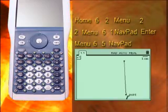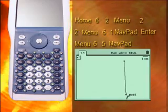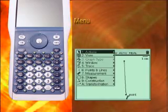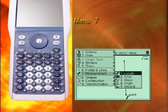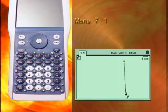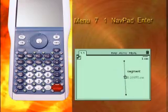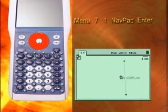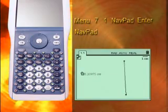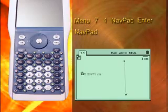Measure the length of the segment. Press Menu, 7, and 1. Move to the segment and click on it. You'll see the measurement appear. Use the NavPad to position this measurement on the left side of the screen. Click to place the measurement.